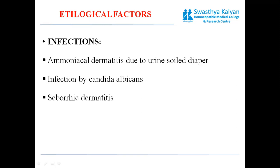Seborrheic dermatitis is a skin disease where rashes are very itchy with skin flakes. The skin is red and severe itching is present. It usually appears on the scalp. So infections include ammoniacal dermatitis, infection by Candida albicans, and seborrheic dermatitis.